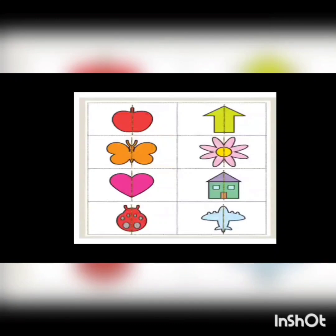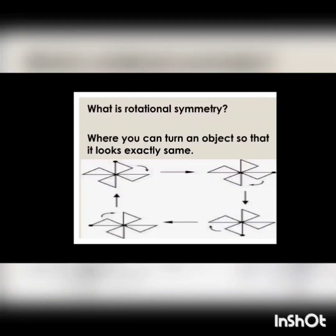Now let's see examples. Apple, butterfly, heart, ladybird — if you see, dividing into two halves is exactly equal. So this is line of symmetry. Then arrow, flower, house, and aeroplane — these are also exactly divided into two halves. Is it clear, children? This is line of symmetry.